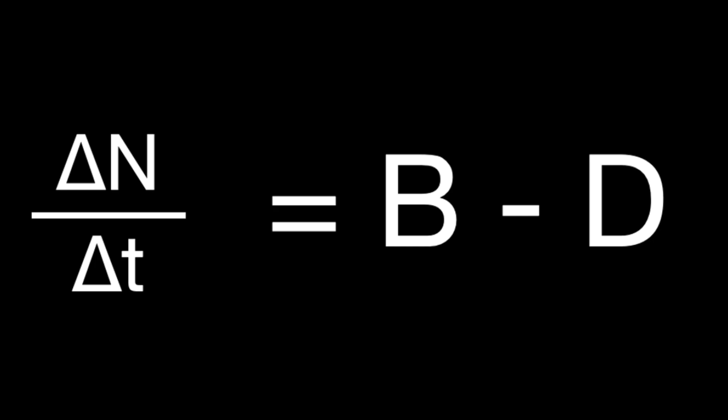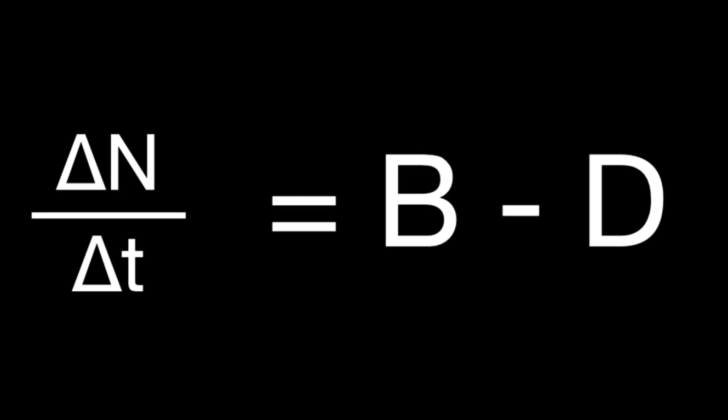Just a heads up that capital and lowercase letters can mean different things in this course. With this in mind, we can modify our mathematical model. In this model, the delta symbol represents 'a change in,' while N and T refer to population size and time, respectively. So in simple terms, this equation means a change in population size over time equals the difference between births and deaths: ΔN/ΔT = B − D.